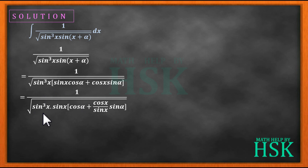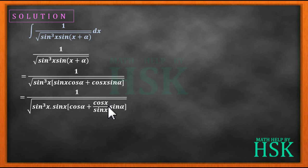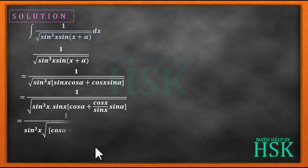We obtain the denominator as sin³x times (sin x cos α + cos x sin α / sin x). This gives us sin⁴x in the denominator, which can be taken outside the square root as sin²x. So sin⁴x becomes sin²x outside the square root.